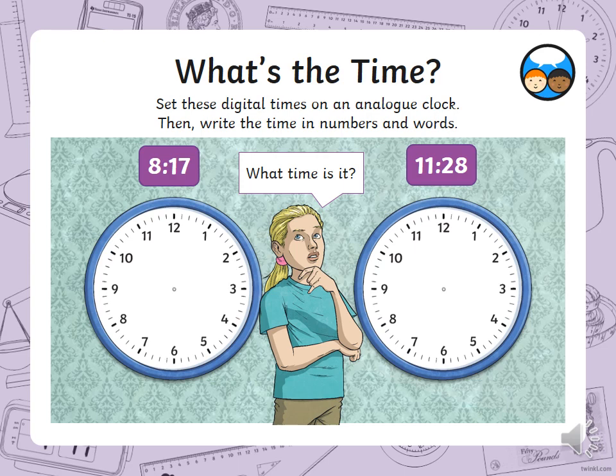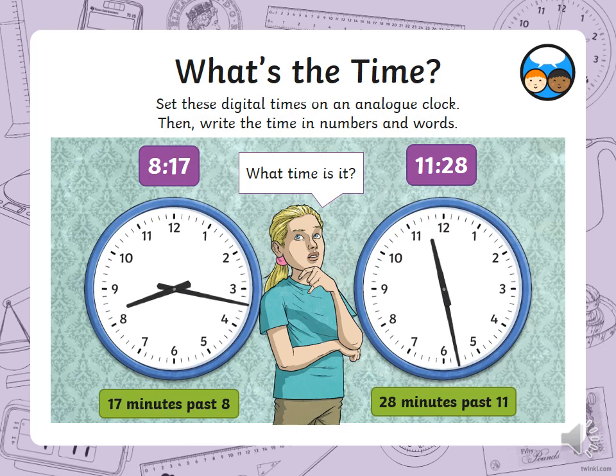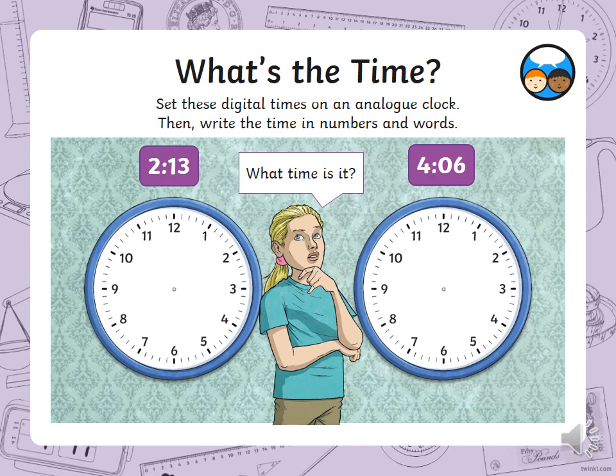Now set these digital times on an analog clock, then write the time in numbers and words. Access the empty clocks worksheet on the Grange website and draw out these times on the clocks — 8:17 and 11:28. Analog clocks are the usual clocks we have in our classroom or school, the ones with the 12 hours.